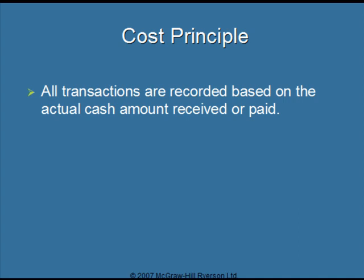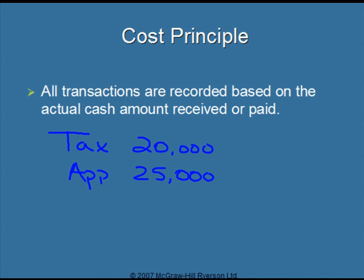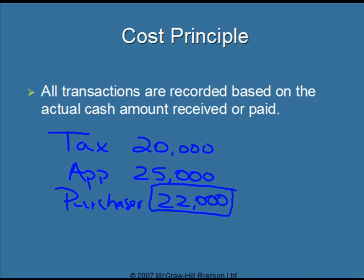The cost principle states that financial information is based on a price a company pays for something, not just someone's opinion of the value. Real estate often has a tax value, an appraised value, and the price somebody is willing to pay. If we have a tax value of $20,000, an appraised value of $25,000, and a purchaser willing to pay $22,000, and the vendor decides to sell, the cost of that land would be $22,000.